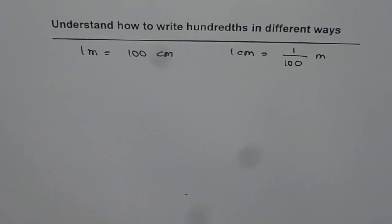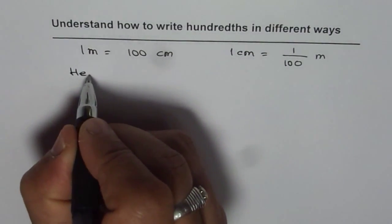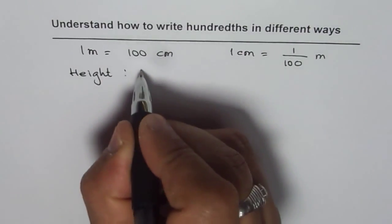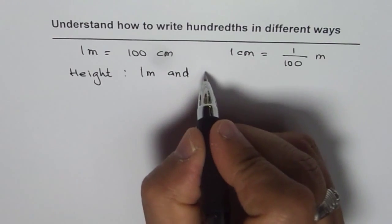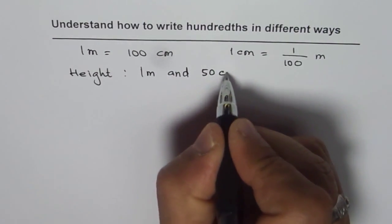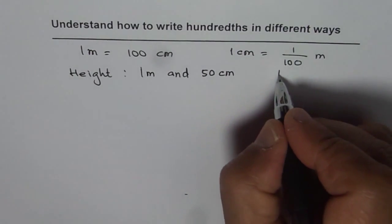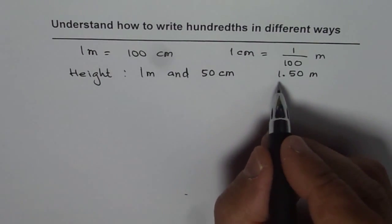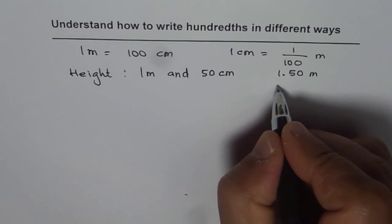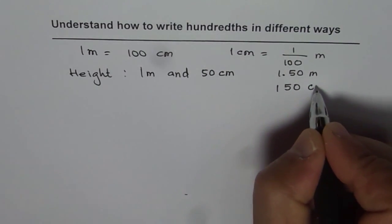So that will help us understand the concept. Let us say the height of a person is one meter and fifty centimeters. We could write this as one point five zero meters, or we could also write this as one hundred fifty centimeters if we multiply by hundred.